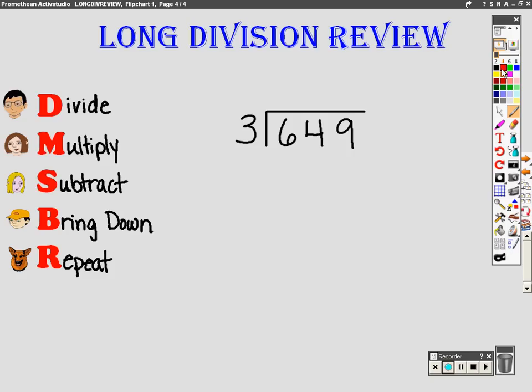Okay, so the first thing we do is we divide. Six divided by three, or how many times does three go into six? That's right, two. Now we multiply. Three times two equals six.